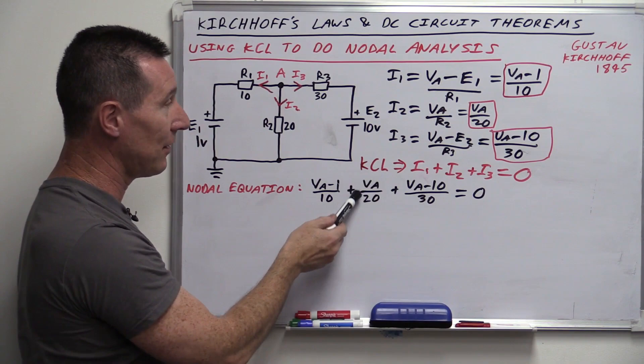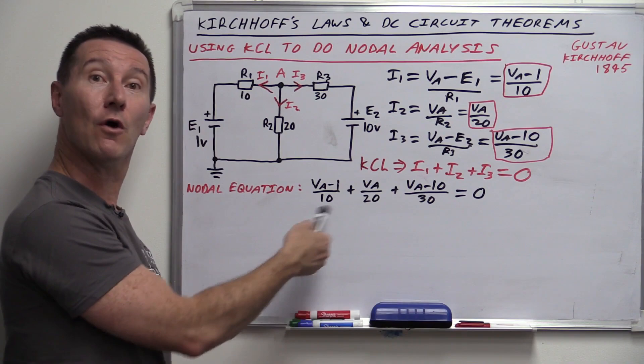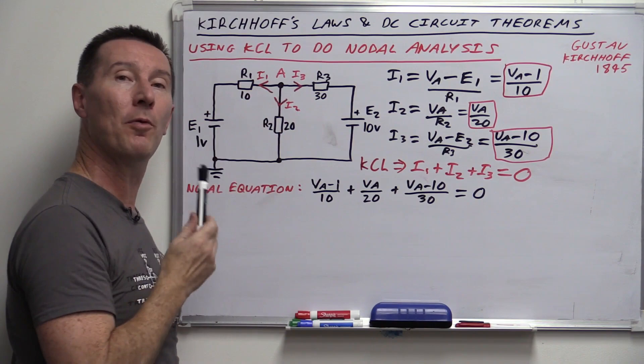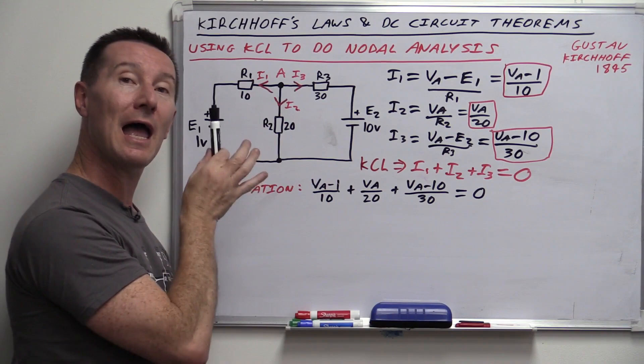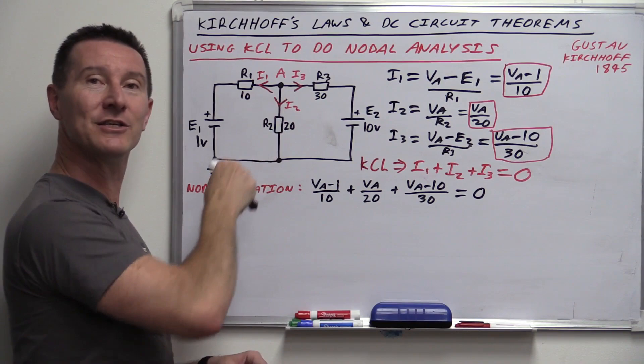There was also a correction: I had 0.333 in one place — it should be 0.0333. And if you're wondering what use this is in the real world — you know that circuit simulator you take for granted that produces magical results and can analyze your circuit with hundreds of nodes at each time step? How does it know what the voltages and currents are? I'll give you one guess — it's nodal analysis.